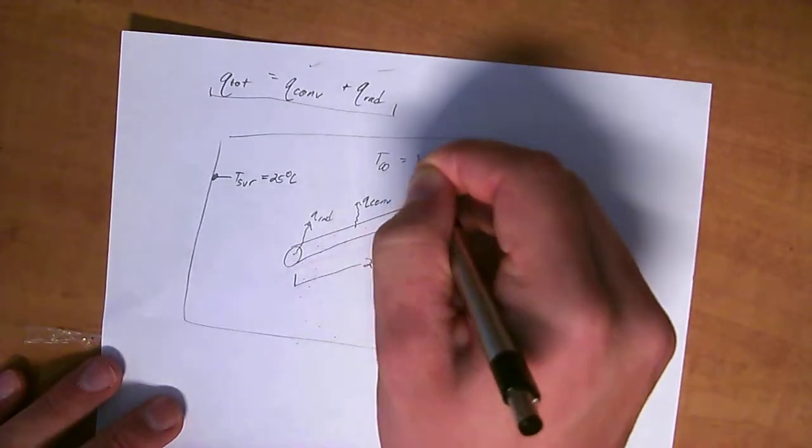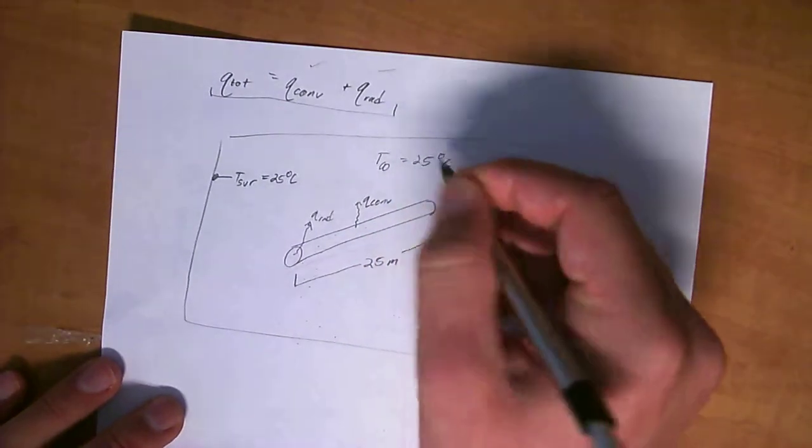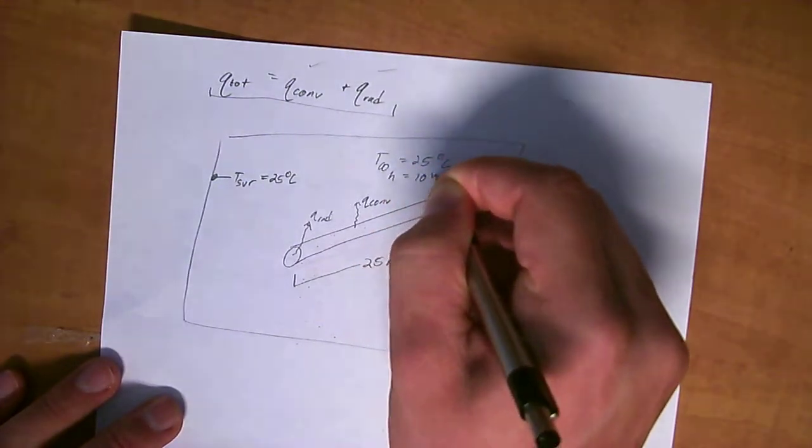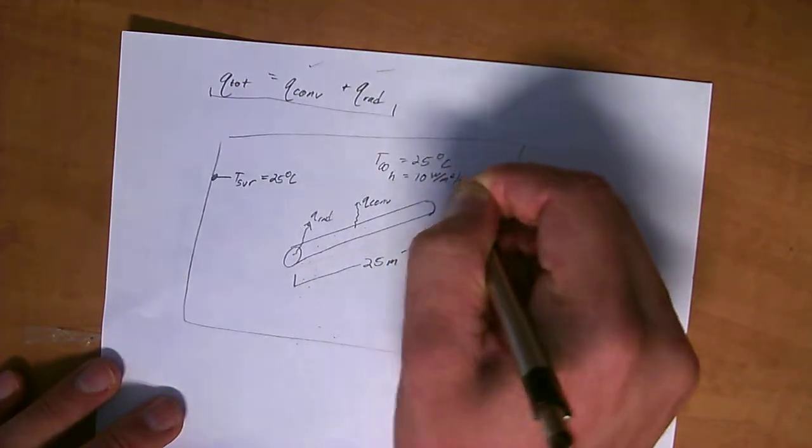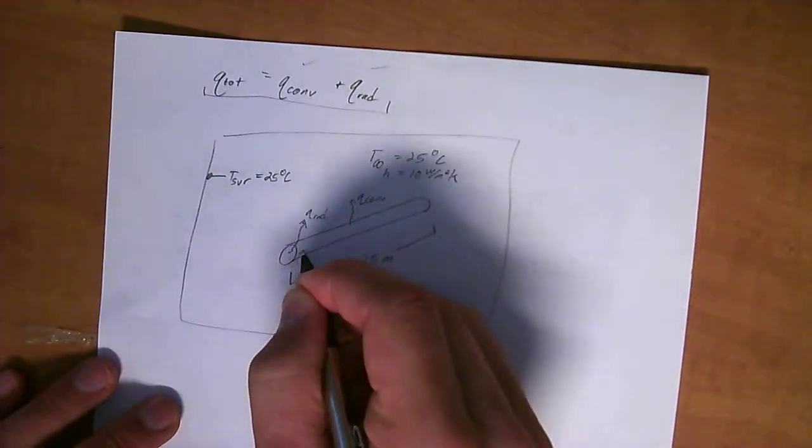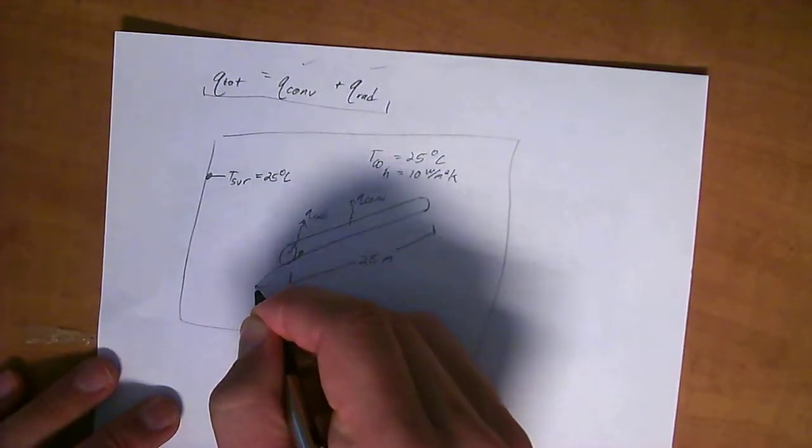We know that the T out here, T infinity, basically the T out in space in the air, is equal to 25 degrees C. And we know that the convective coefficient, h, is equal to 10 watts per meter squared Kelvin.